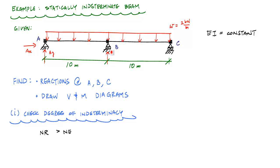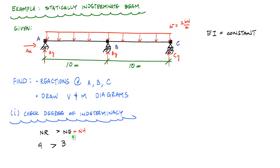The roller support at B gives reaction B_Y, and at C we have C_Y. Note this is a simple way to check and does not work all the time, especially when there are hinges. If the number of reactions is greater than or equal to the number of equilibrium equations plus the number of hinges, the structure is statically indeterminate. Here the number of reactions is 4, which is greater than the 3 equilibrium equations with no hinges, so yes, this structure is statically indeterminate.